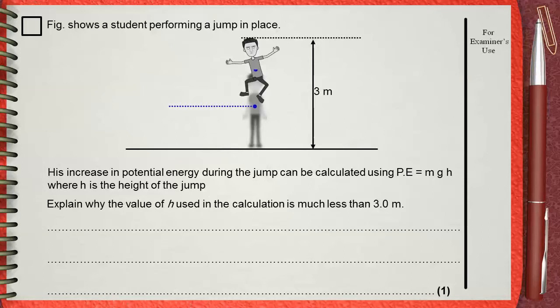It is clear that this increase in height is much less than the 3 meters. So the new thing you must know here is that H is actually the increase of the height of the center of mass of the body.